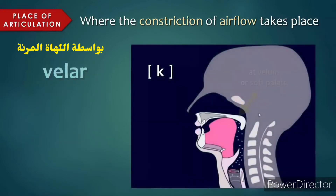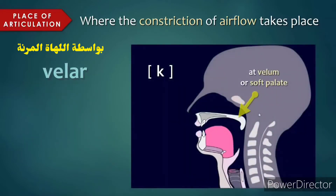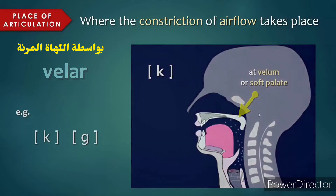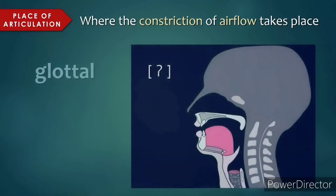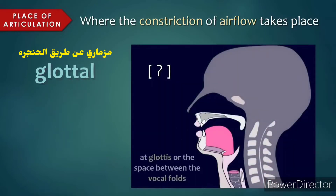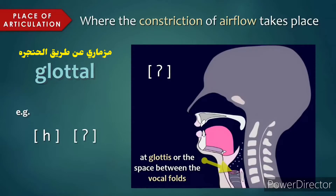Velar sounds are produced at the velum, or soft palate, such as k, g. And glottal sounds are produced at the glottis, or the space between the vocal folds, such as h, or the catch in the throat, as in Batman.